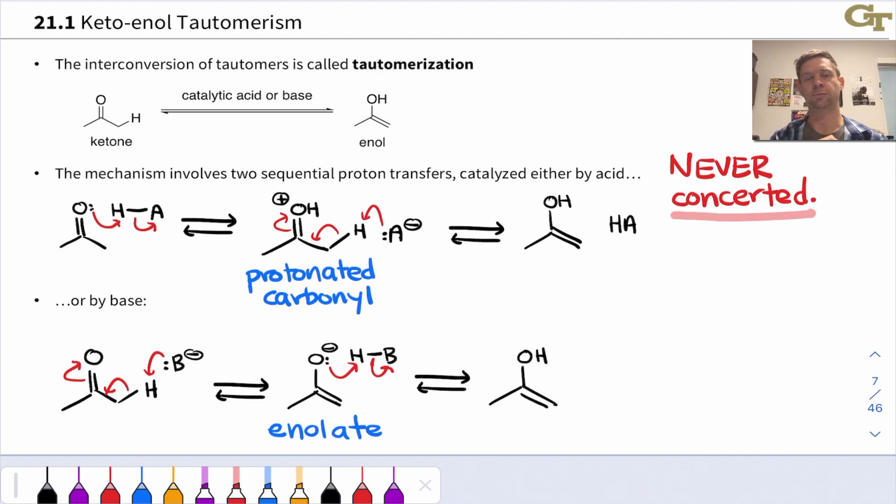The reaction is referred to as tautomerization since we're interconverting tautomers, converting the keto form to the enol form or vice versa. Of course, the mechanism's in reverse. It's actually worth pausing the video and drawing those on your own. Try drawing a mechanism for acid-catalyzed conversion of the enol form back to the keto form, and base-catalyzed conversion of the enol form back to the keto form.